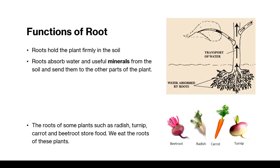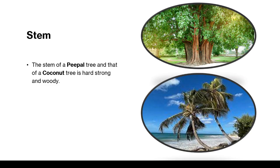So, from the roots, let's now move to the stem. The stem of a peeple tree and that of a coconut tree is hard, strong and woody. It is called a trunk. The trunk holds the tree upright.